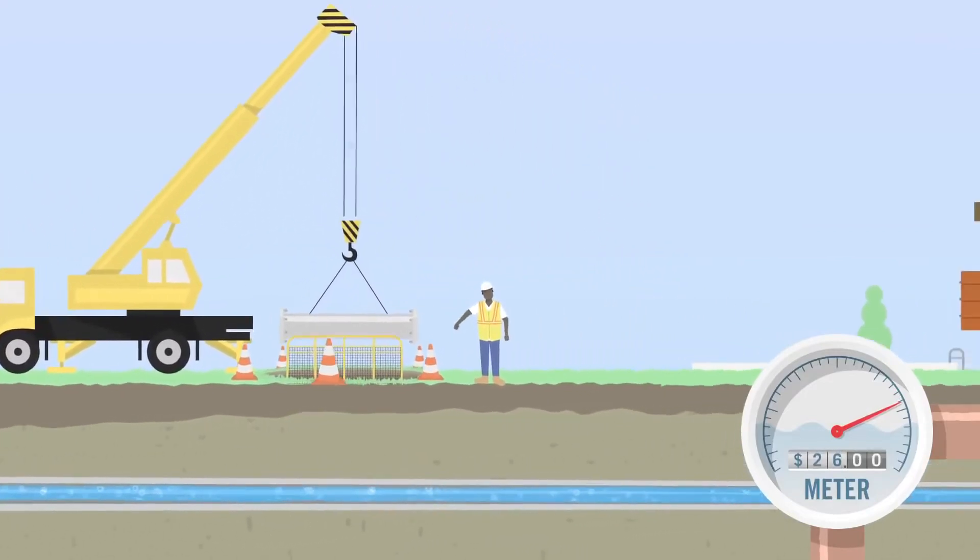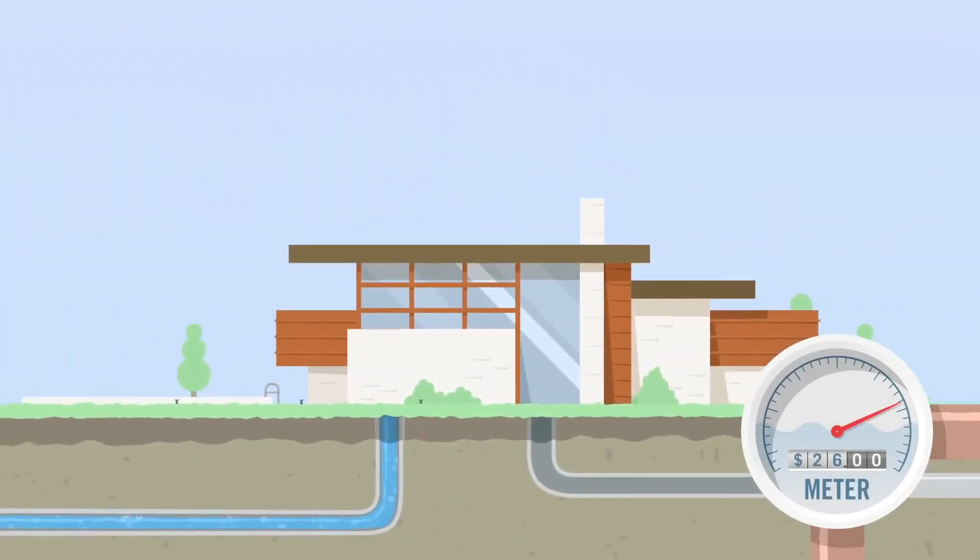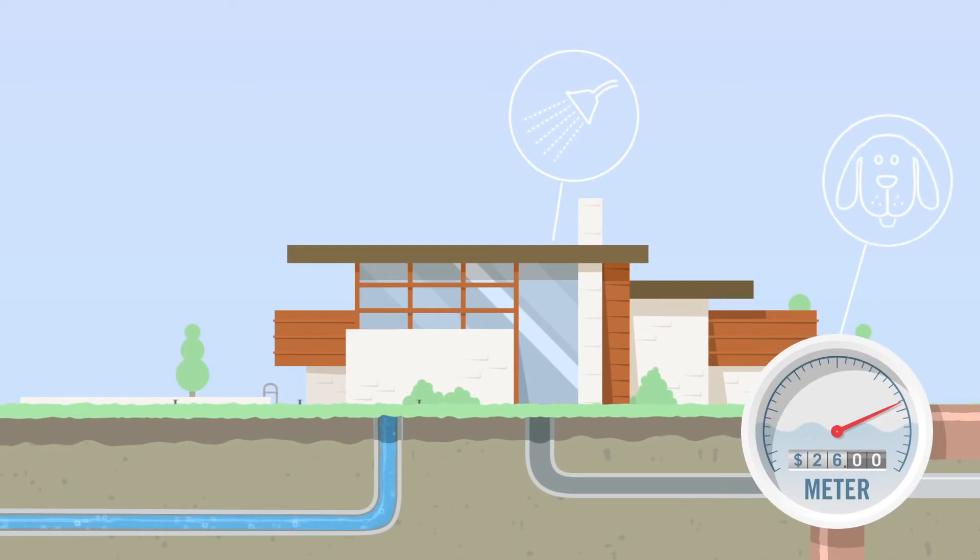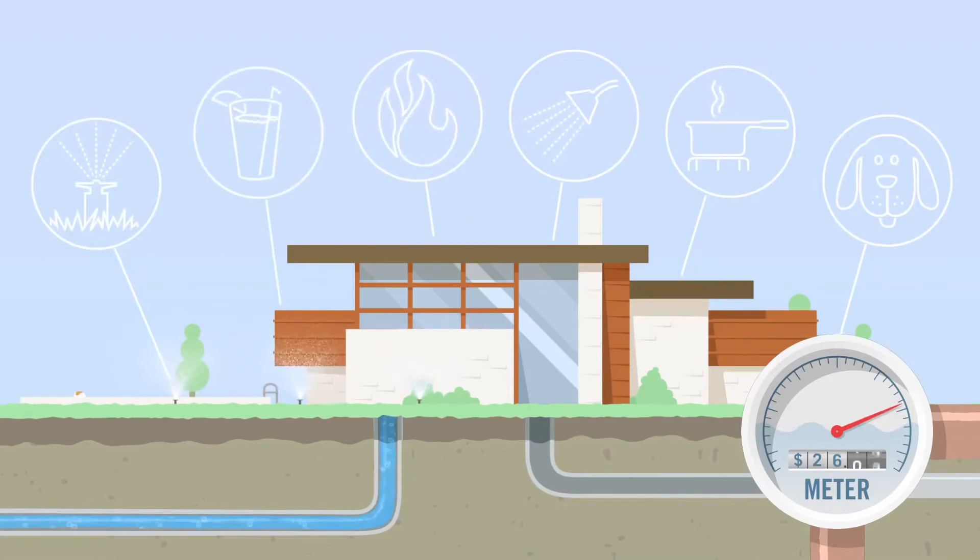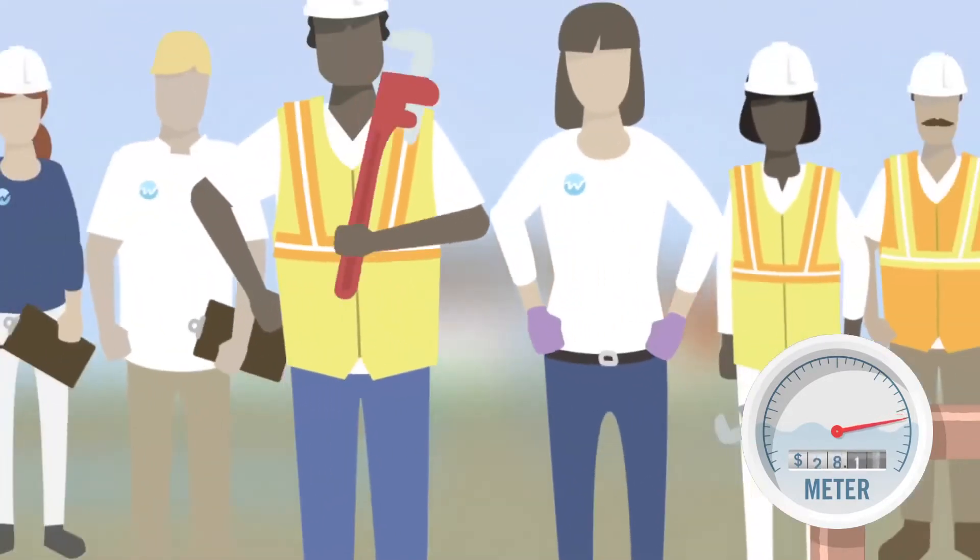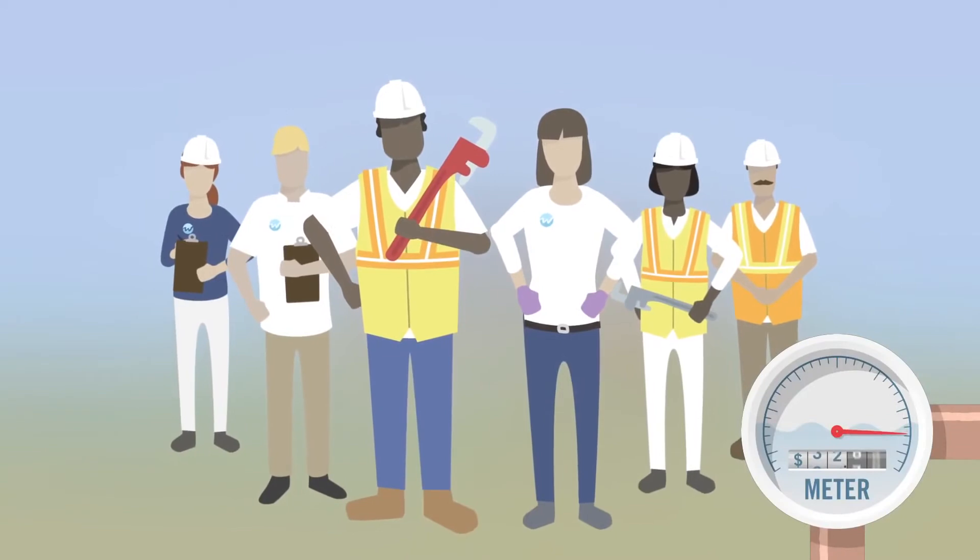And that's how water arrives where you need it: to shower, wash your dog, cook a meal, water your lawn, put out fires, and make lemonade. About that water bill—each month, utility professionals read your meter to track your water use.